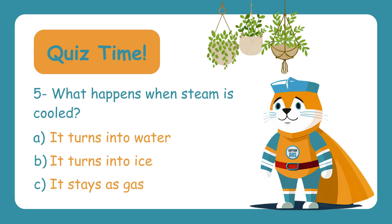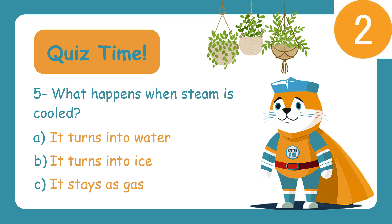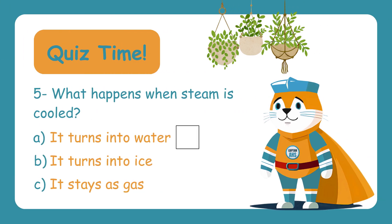What happens when steam is cooled? A, it turns into water! B, it turns into ice! C, it stays as gas! When steam cools down, it turns back into water. So the answer is A — it turns into water! This is called condensation.